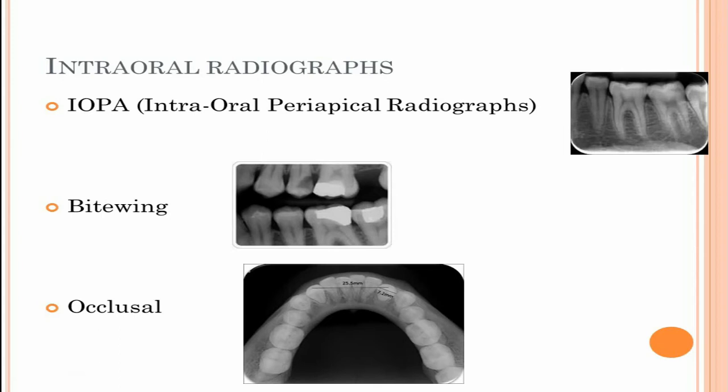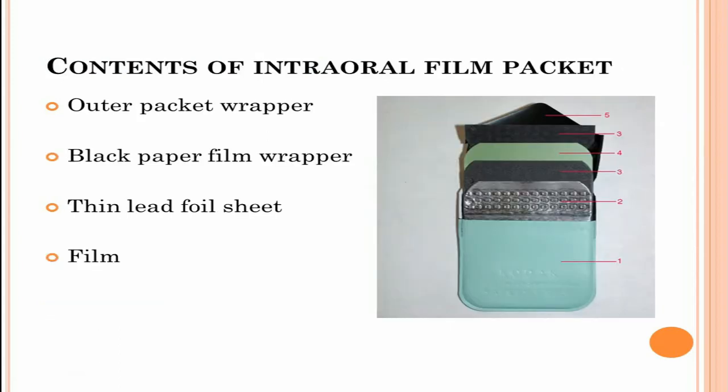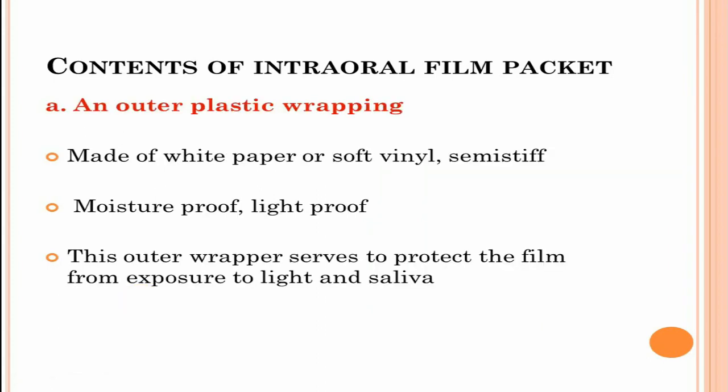Now we will see the contents of the intraoral film packet. An intraoral film packet has an outer packet wrapper, black paper film wrapper, thin lead foil sheet and the intraoral film. The outer plastic wrapping is made of white paper or soft vinyl, semi-stiff, moisture-proof and light-proof. This outer wrapper protects the film from exposure to light and saliva.